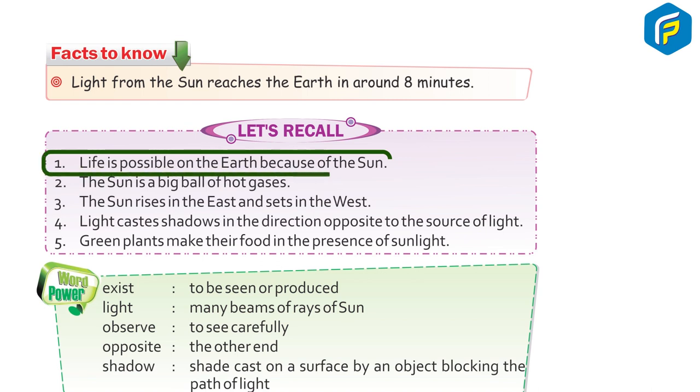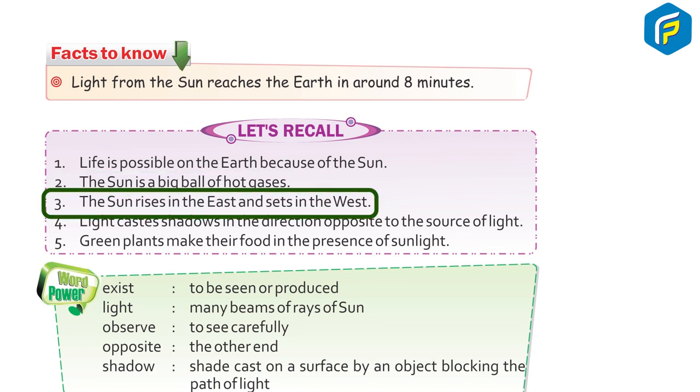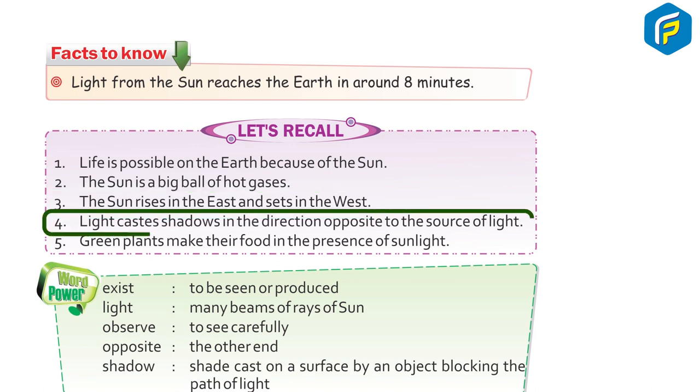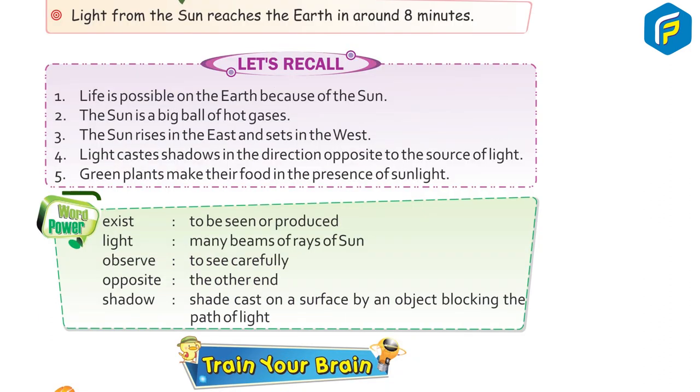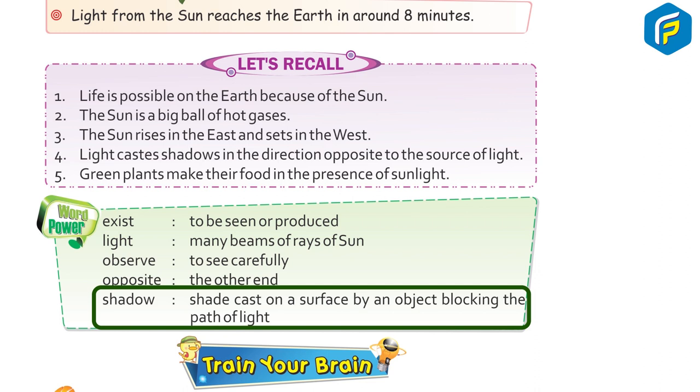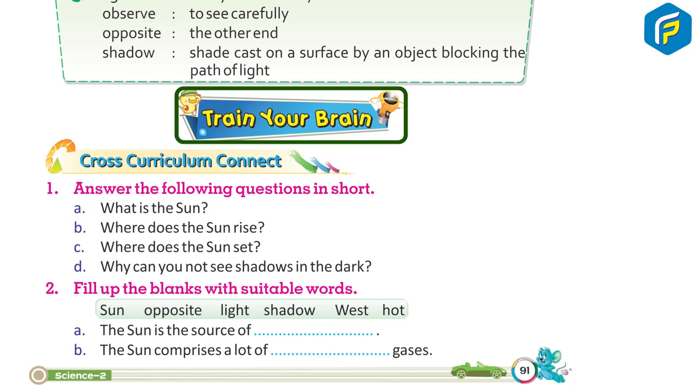Let's recall: 1. Life is possible on the Earth because of the Sun. 2. The Sun is a big ball of hot gases. 3. The Sun rises in the east and sets in the west. 4. Light casts shadow in the direction opposite to the source of light. 5. Green plants make their food in the presence of sunlight. Vocabulary: observe means to see carefully, opposite means the other end, shadow is shade cast on a surface by an object blocking part of light.